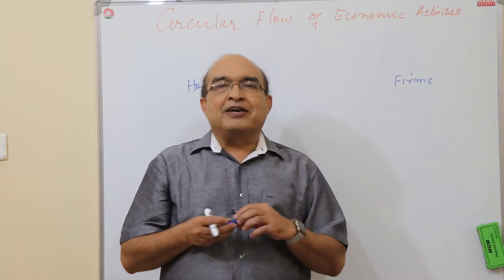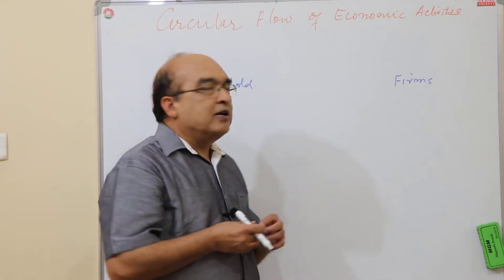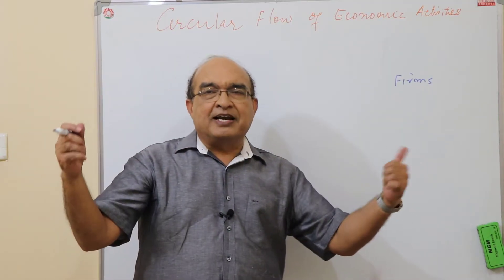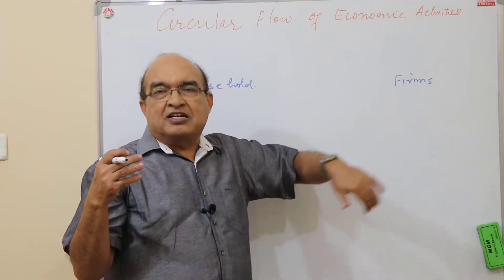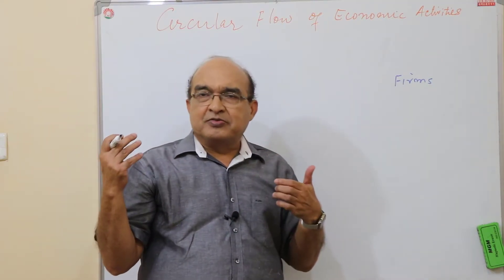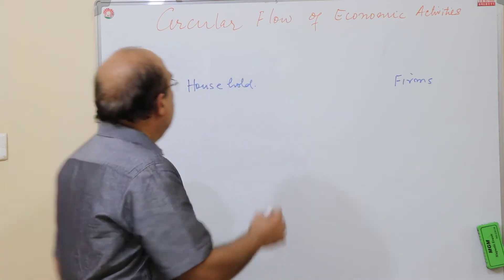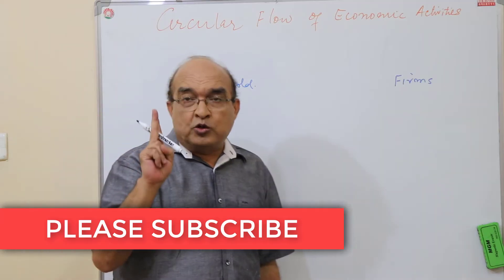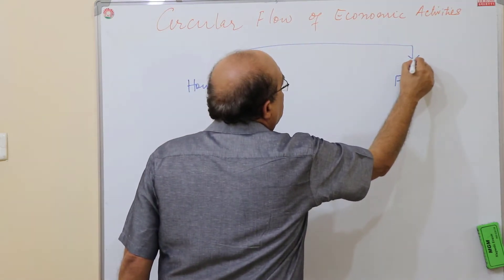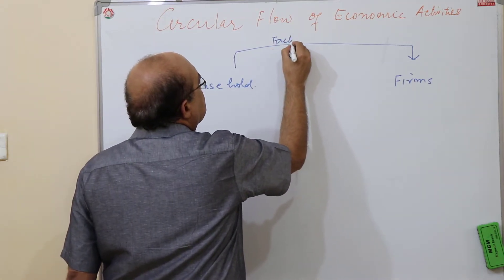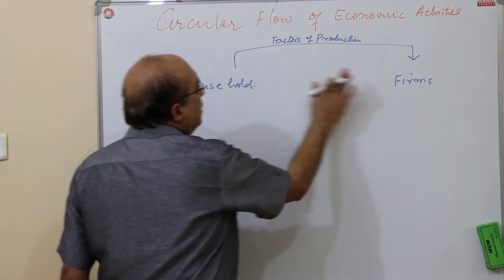At the stage where this topic is taught in an undergraduate course, firms and households are two separate entities. They are identified by their functions — the entities that are producing are the firms. We are assuming that only two sectors exist; government is not there and the external sector is not there. There exists a flow of factors of production from household to firms.